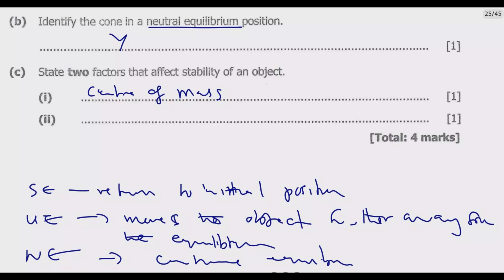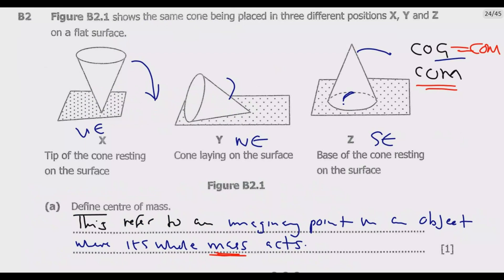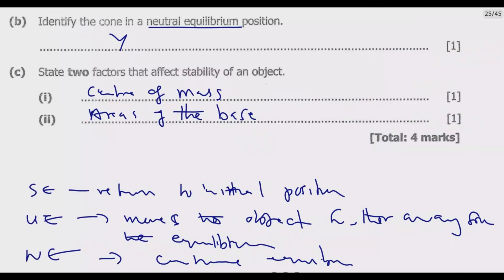Number two, the area of the base. The bigger the area of the base, the more stable it is. In this case, this one has a bigger base area, so this one is more stable. Hence, it is stable equilibrium. This one has a very small base where it is sitting, so this one is unstable. These are the two factors that affect the stability of an object.